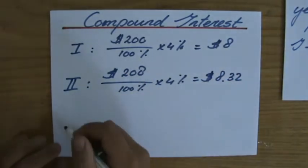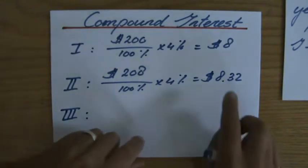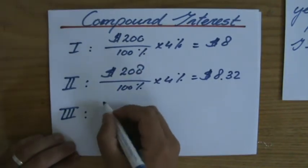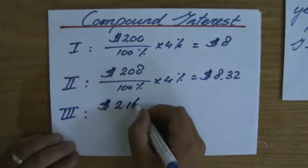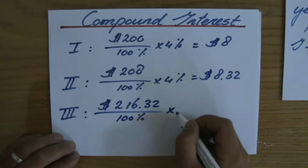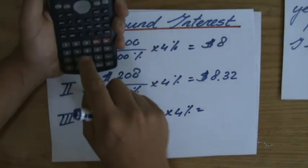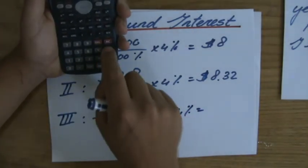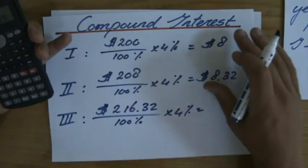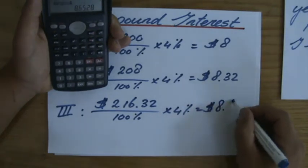At the beginning of year three, I will not have $208 in my bank account anymore. I add the interest—because it's compound interest—to that amount. So I'm going to have $216.32 sitting in my bank account, and now I'm going to get 4% over that amount. Now I'm going to use my calculator. $216.32 divided by 100 times 4—you might use a different method to find a percentage of an amount—I use this method. It is $8.6528.